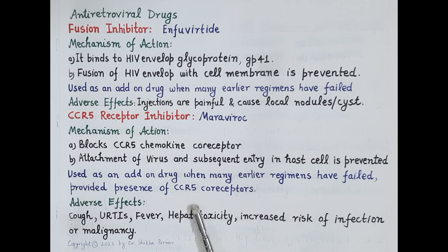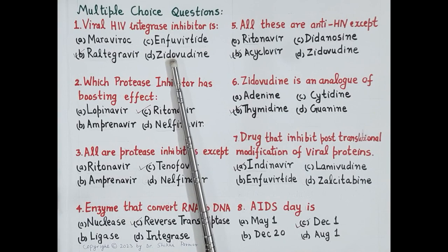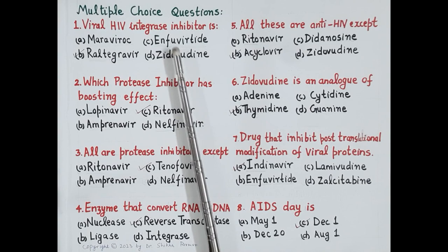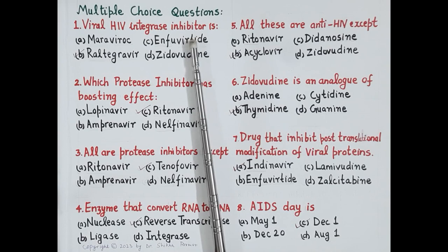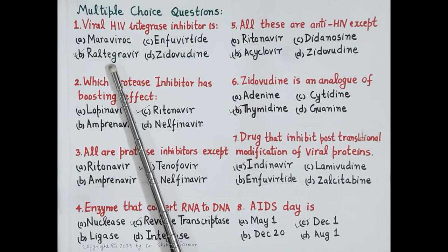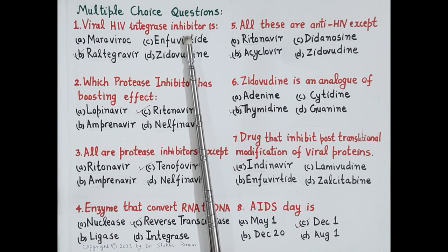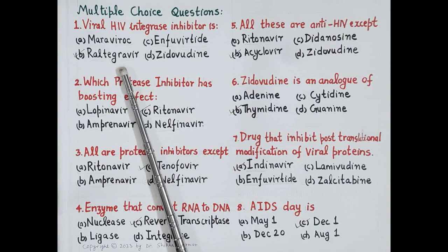Now let's solve a few multiple choice questions on antiretroviral drugs. The first question: which drug is a viral HIV integrase inhibitor? The options include maraviroc (a CCR5 antagonist), raltegravir, enfuvirtide (a fusion inhibitor), and zidovudine (a nucleoside reverse transcriptase inhibitor). Integrase inhibitors end with 'gravir,' so the correct answer is raltegravir.